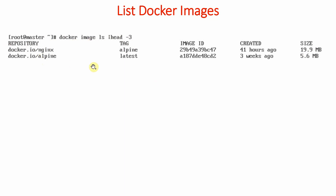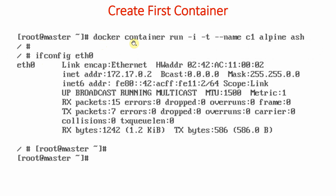Now we run the command: docker container run -i (interactive mode), attach terminal, name the container c1, create it from the alpine image, and run the sh shell. Immediately within a second our container is created. We are now inside the container, which is why we used the -i and -t options. By running ifconfig eth0 we can check the IP address, which shows 172.17.0.3 — that is the IP address of this container. Pressing Ctrl+D will log us out of the container.